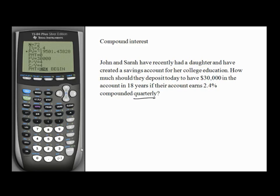And we can see that John and Sarah would need to deposit $19,501.44 to be able to save up for their daughter's education in 18 years.